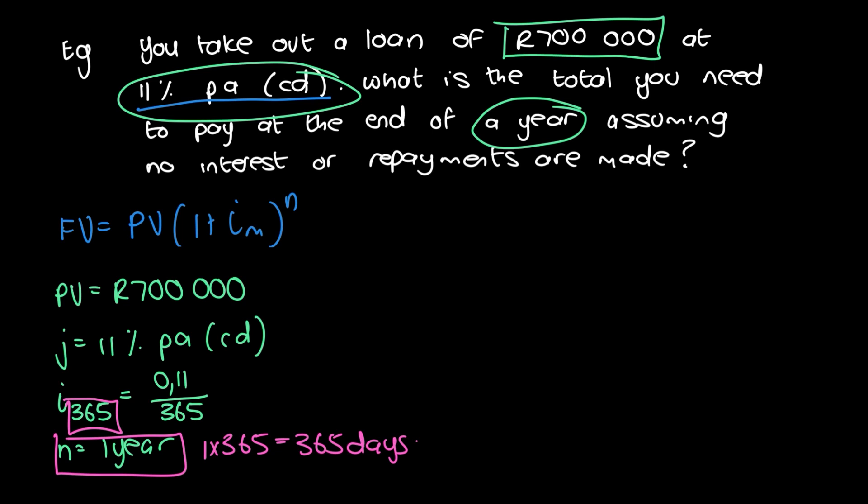And now we can put everything into our formula. So our formula is the future value equals 700,000 times 1 plus 0.11 divided by 365, all to the power of 365. And if we go ahead and solve that, we are going to get 781,381.70. And I use the approximately equal sign because I rounded it off. You don't have to overly stress about that.